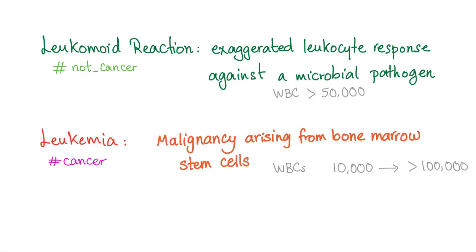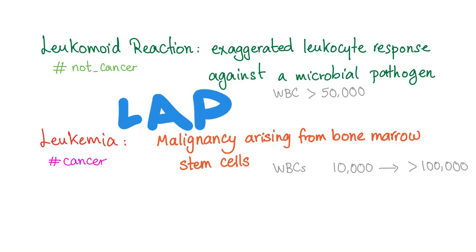Usually the leukocyte count in leukomoid reaction will be greater than 50,000. How do I know that this is not leukemia? Leukemia is a malignancy arising from bone marrow stem cells. In leukemia, white blood cells can range from 10,000 all the way up to 100,000 or even more. So 50,000 or 60,000 can be either a leukomoid reaction or a leukemia. To tell which is which, we need the leukocyte alkaline phosphatase. Leukomoid reaction is not cancer; leukemia, of course, is. Your leukocyte alkaline phosphatase score will tell you which is leukemia and which is leukomoid.